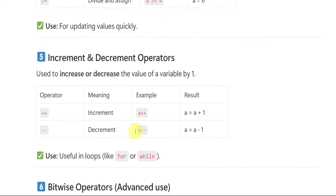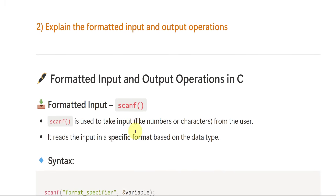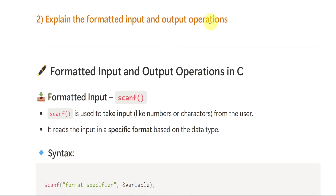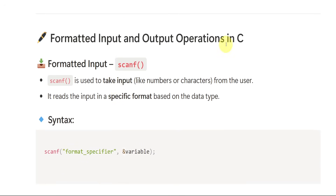So the first complete explanation is done. Now let us go to the second question: explain formatted input and output operations in C. The input and output operations are scanf and printf. We use scanf when we want to take input. Scanf with parentheses — those brackets are known as parentheses. Scanf is used to take input from the user.